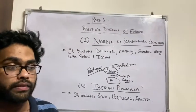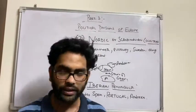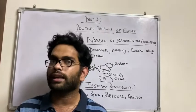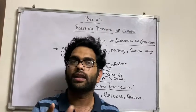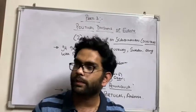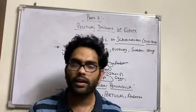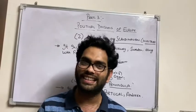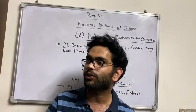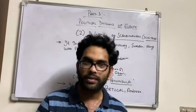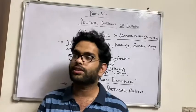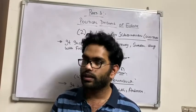So let me recap what we have studied. First, we studied the Scandinavian countries. The mnemonic is DNS — D for Denmark, N for Norway, S for Sweden. Some people also mention Finland and Iceland, but basically these three countries make up the Scandinavian countries.